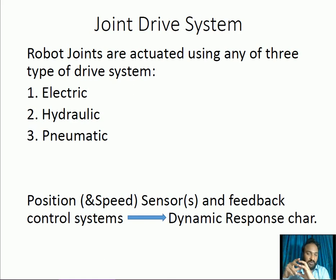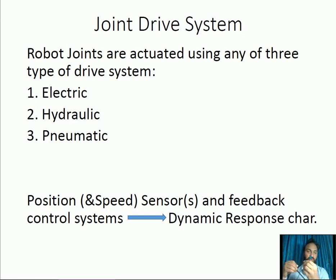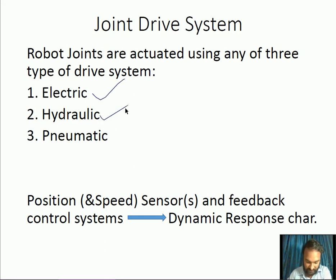To move the joints means we are controlling the robotic arm by movement in the joints. If there is a joint, how do we move it so that the part can be positioned at the required place? There are three different types of drive systems used in robotics: electric, hydraulic, and pneumatic.